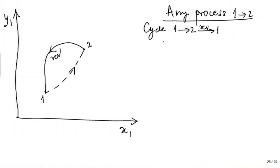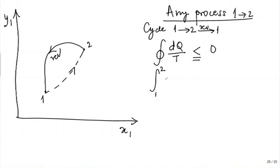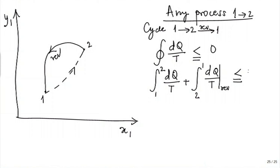It is not asserted to be a reversible cycle because the process 1 to 2 is some general process — the Clausius inequality is applicable as an inequality. So for this cycle, the integral of dq/T will be less than or equal to 0. Expanding this gives: integral 1 to 2 of dq/T plus integral 2 to 1 of dq/T for the reversible process is less than or equal to 0.